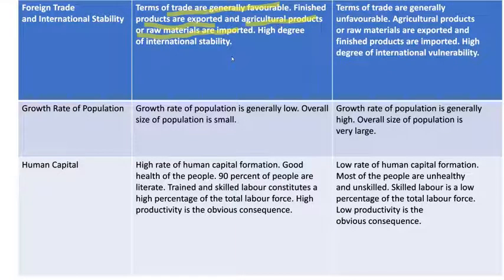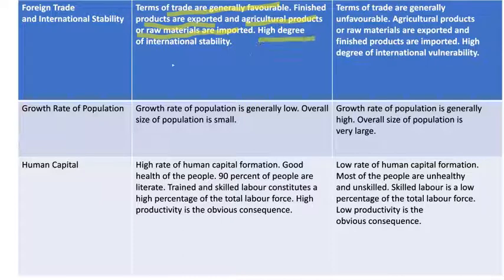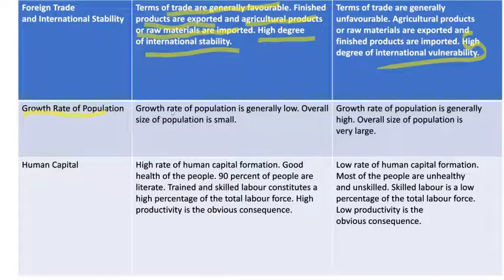Underdeveloped countries have a high degree of international instability. Then, growth rate of population — in developed countries, growth rate of population is generally low. But when compared to the underdeveloped countries, their growth rate of population is high.